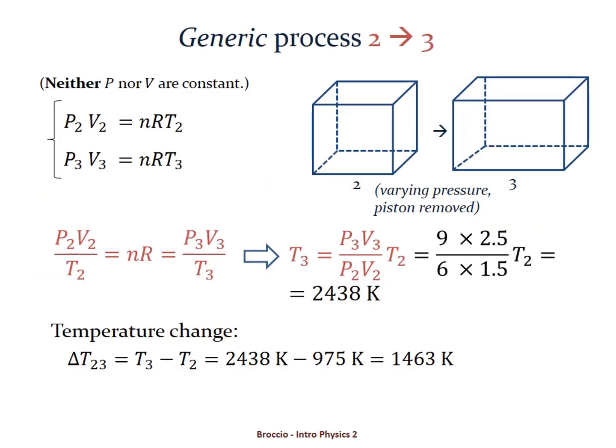So if you did read out the values correctly and notice that the units will cancel both units of pressure and units of volume, that is equal to 2438 kelvin.